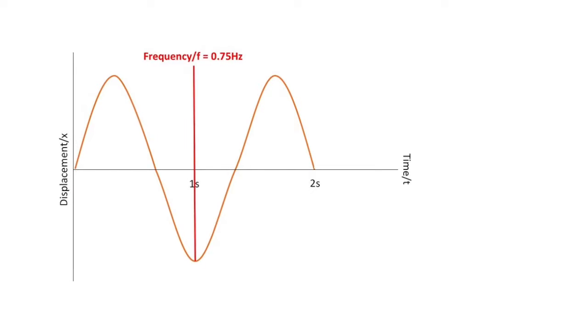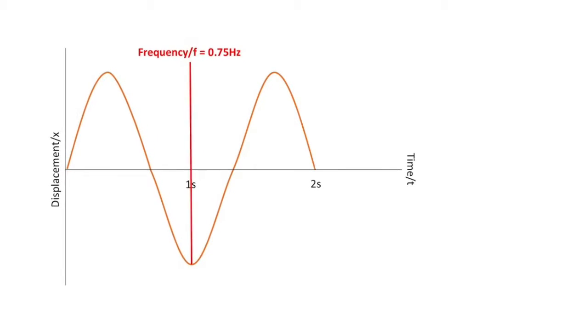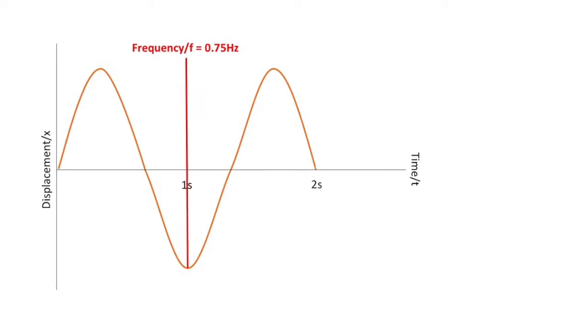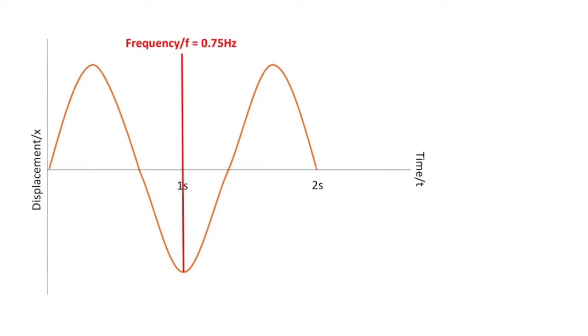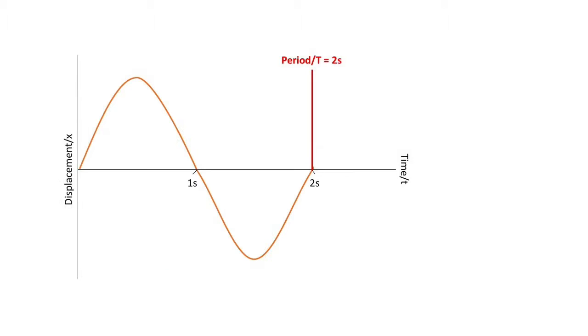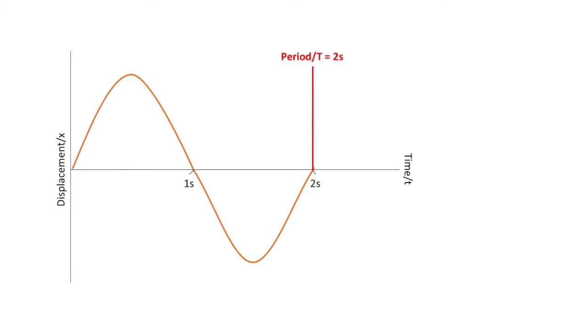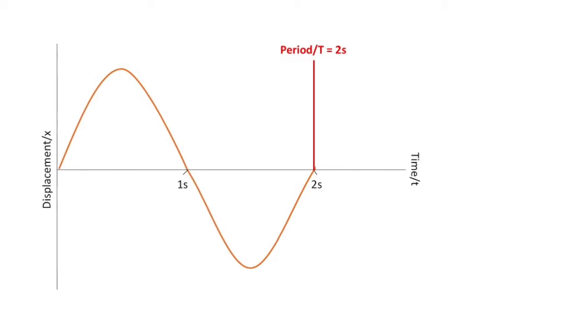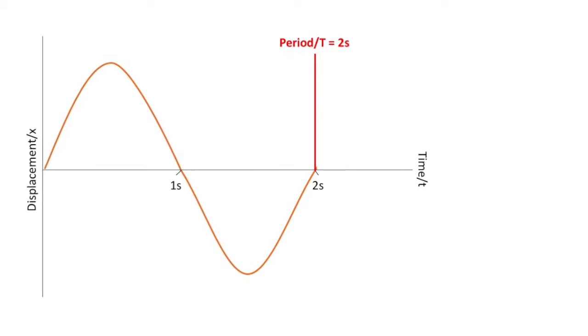Frequency is the amount of cycles that happen per second. It is measured in hertz, and its unit is second to the minus one, and its symbol can be F or V. Period is the amount of time it takes for a wave to complete a cycle. Its units are seconds, and its symbol is T.